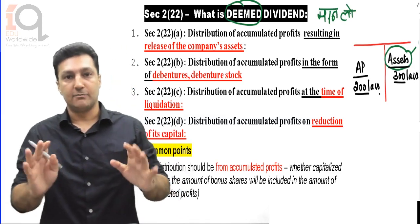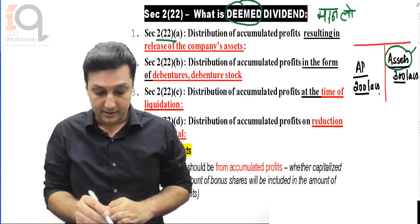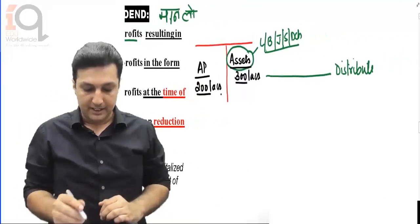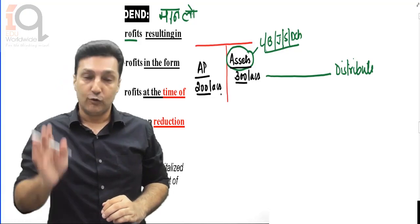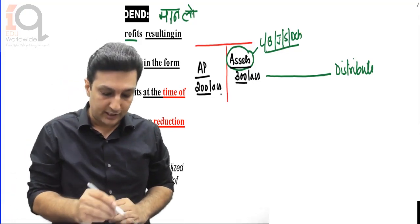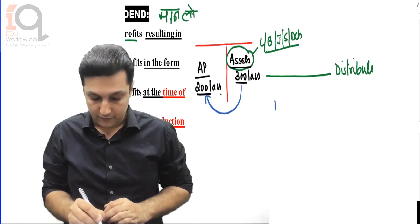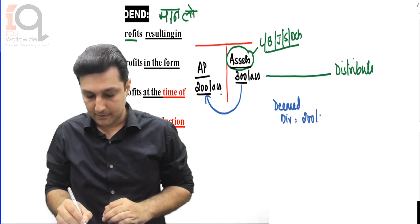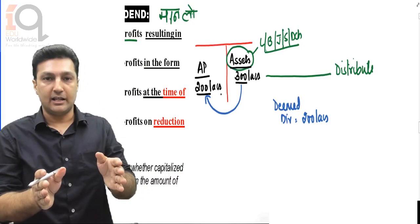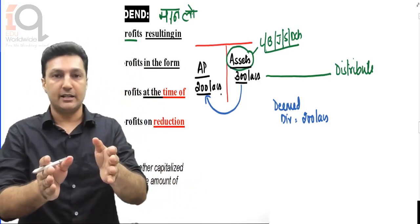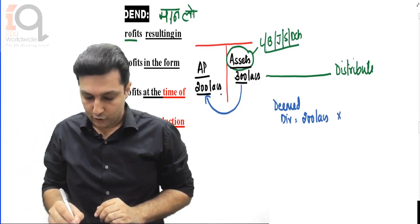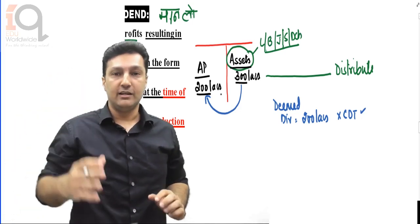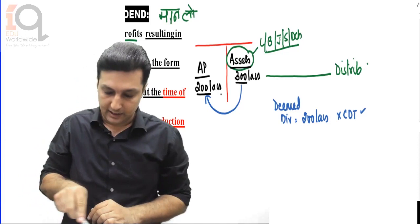Under income tax, the first clause - section 2(22)A - covers distribution of accumulated profits resulting in the release of the company's assets. If the company gave assets to shareholders, that is also treated as deemed dividend, but of course only to the extent of accumulated profits. Therefore in this case, deemed dividend is going to be 200 lakhs. At intermediate level we will cover this at a simple level - and on this, corporate dividend tax will apply.